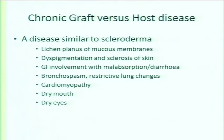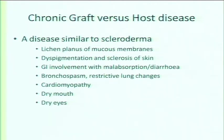Chronic GVHD is a different disease altogether — like scleroderma. Features include dyspigmentation, lichen planus, GI involvement, difficulty swallowing, restrictive lung disease, cardiomyopathy, dry eyes, and dry mouth. One patient, now 10 years post-transplant, has contractures and severe skin involvement despite all efforts. Yet the courage of such patients is remarkable — they continue to go to work and manage their lives, even though quality of life is quite difficult.